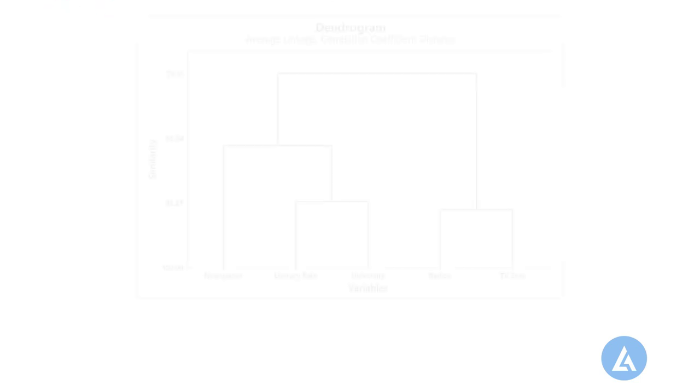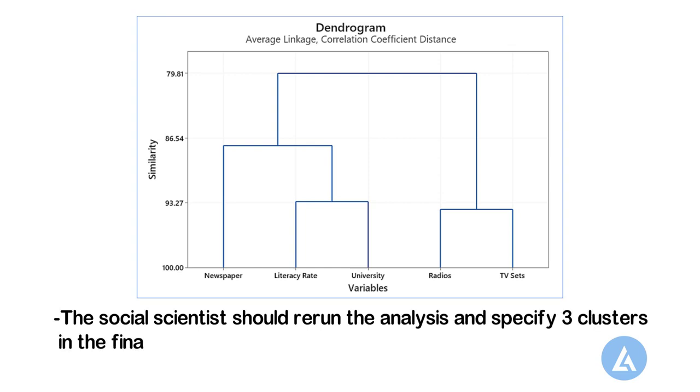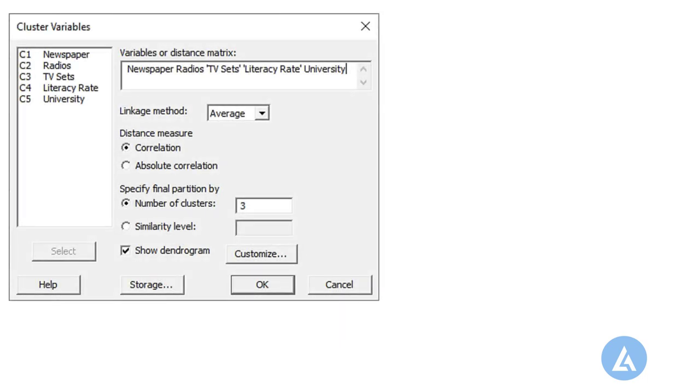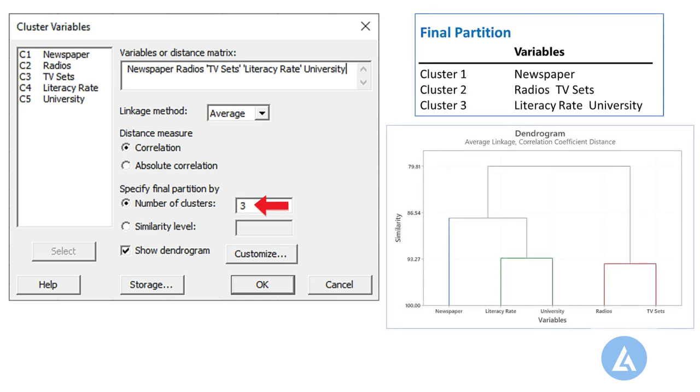The dendrogram displays the information from the table in the form of a tree diagram. The social scientist should run the analysis and specify three clusters in the final partition. When you specify a final partition, Minitab displays additional tables that describe the characteristics of each cluster included in the final partition.